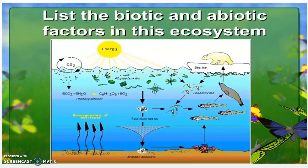Alright, so let's look at the first diagram here. You are going to list the biotic and the abiotic factors in this ecosystem. This is some type of marine or water ecosystem. I want you to look at this diagram carefully, then make a t-chart and list as many biotic or living factors that you can and abiotic or non-living factors. I'll give you a little time here to look over this picture.